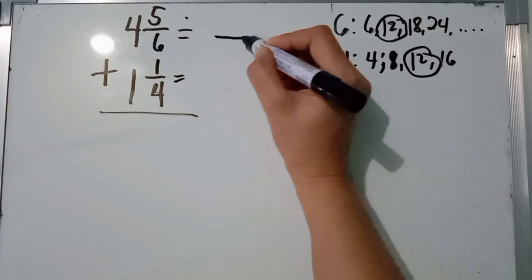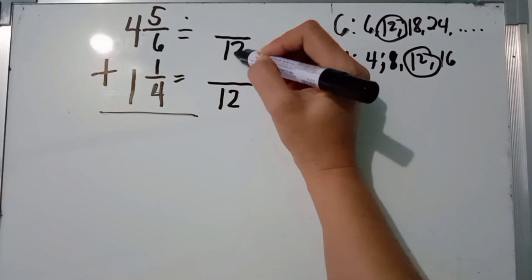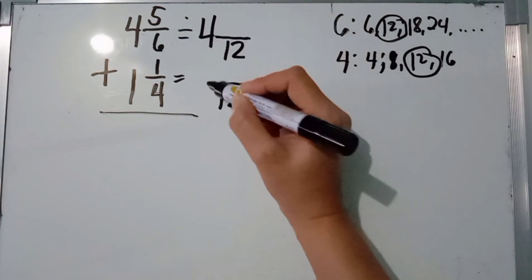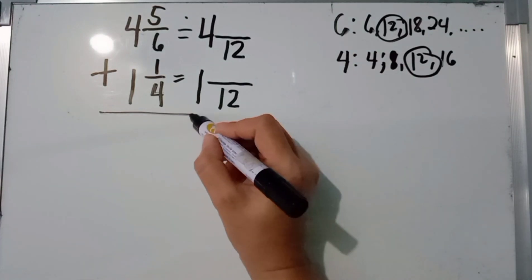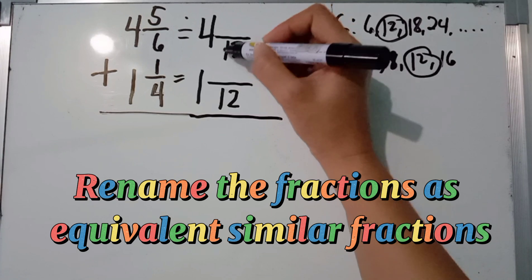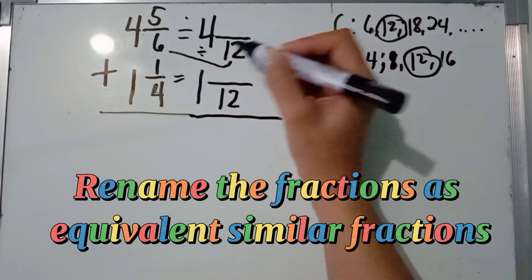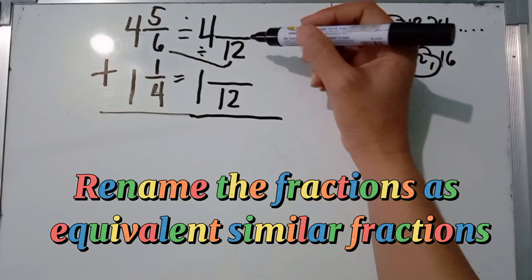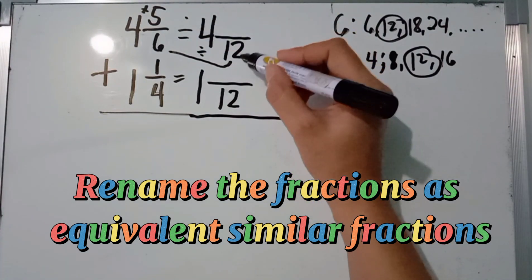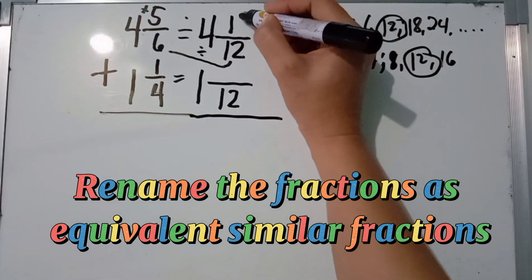We are going to put the LCD of 12 here, and just copy the whole numbers. Now, divide the LCD by the original denominator: 12 divided by 6 is 2. Then multiply by the numerator: 2 times 5 equals 10. So we write 10 as the new numerator.